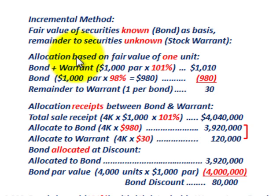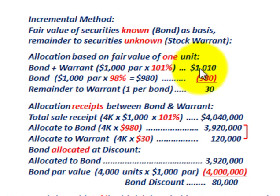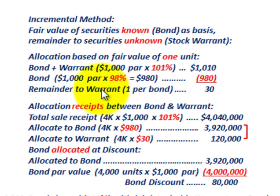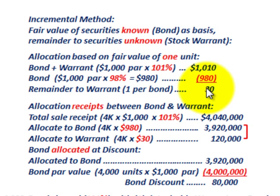Let's look at the allocation based on the fair value of one unit — one bond plus one stock warrant. The bond plus the warrant: the $1,000 par value times 101% gives us an issue price of $1,010. The bond alone, at $1,000 par sold separately at 98% of par, equals $980. We don't know the price of the warrant, but we know the total price for bond plus warrant was $1,010, and the bond alone was $980. So the difference — the remainder — goes to the warrant: $30 each for the warrant.